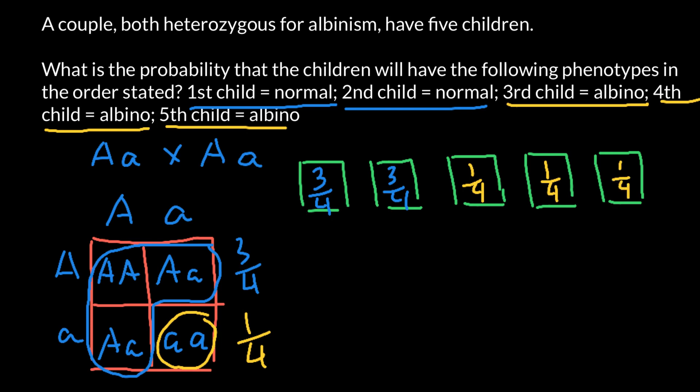In order to find the probability of these events, and each event here is independent because each birth is an independent event, we have to multiply all these independent events in order to find the probability that all these events would happen in this particular order.